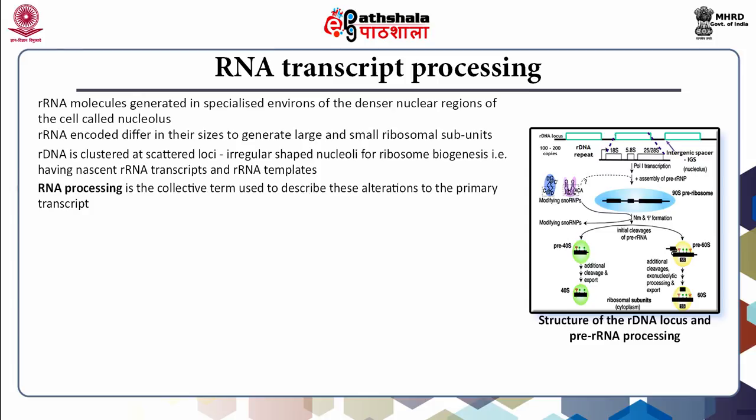rRNA is often clustered at scattered loci of the genome. For example, in humans at the interphase stage of the cell, rRNA is clustered forming irregularly shaped nuclear structures or nucleoli, playing a central role in ribosome biogenesis. The granular nucleolus is mostly composed of ribosomal subunits with fibrillar materials indicative of rRNA templates and nascent rRNA transcripts.